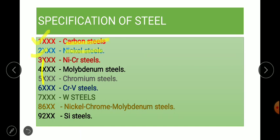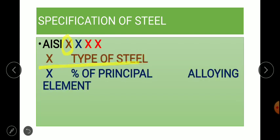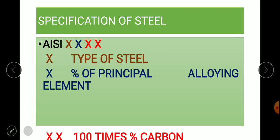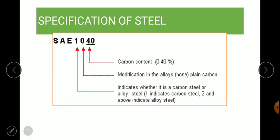If one is there, it's a carbon steel; if two, it's a nickel steel; if six, it's a chromium vanadium steel. The first digit indicates type of steel. Second digit indicates the percentage of principal alloying element. Last two digits in red color indicate 100 times the percentage of carbon. For example, consider SAE 1040.